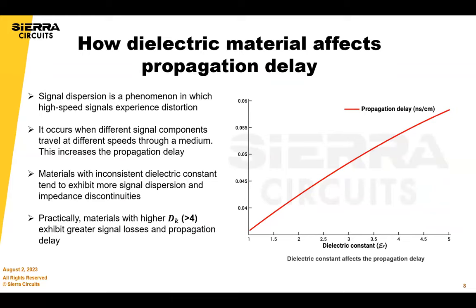How does the dielectric material affect propagation delay? Signal dispersion is a phenomenon in which high-speed signals experience distortion. It occurs when signal components travel at different speeds through a medium, which increases the propagation delay.